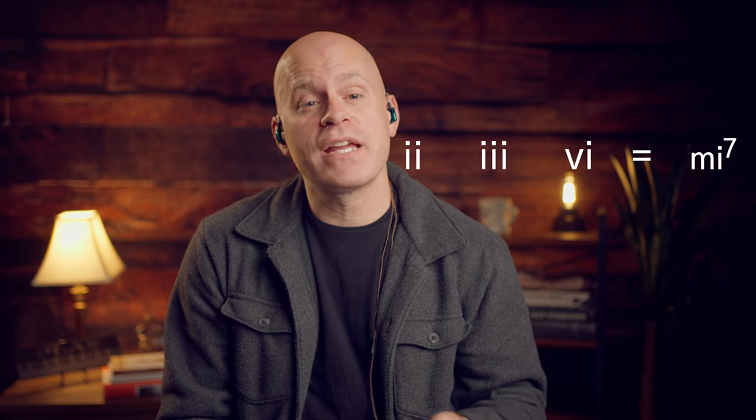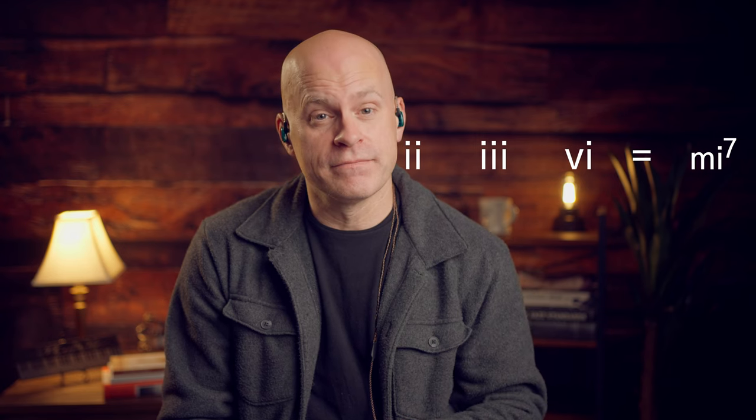The one chord and the four chord are major seven chords. Two, three, and six is minor seven. The five is dominant, and the seven is half diminished. One and four is what kind of chord? Two, three, and six is what kind of chord? Five is always, and seven is half diminished.